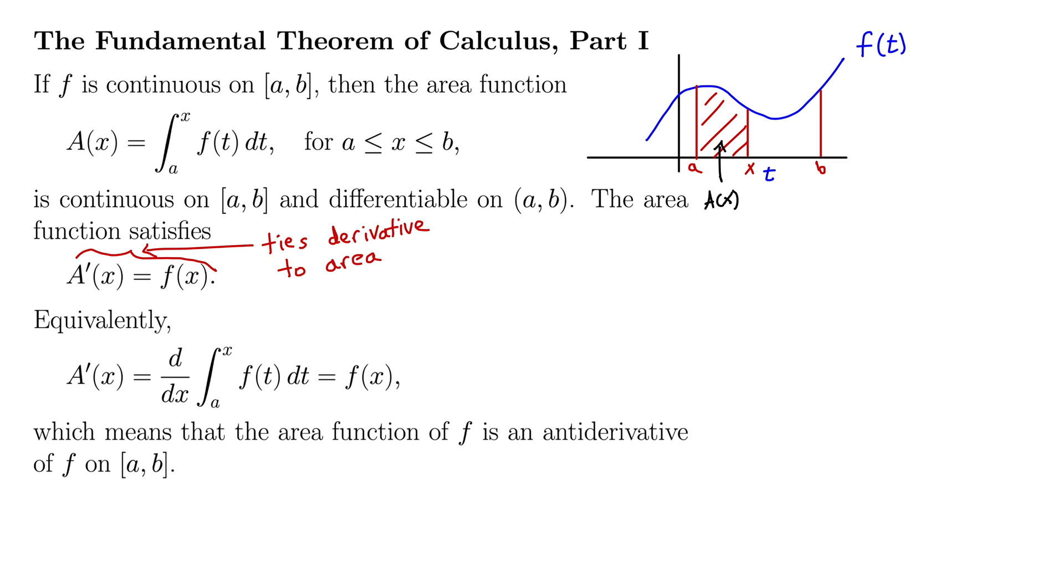Right? It tells us if we take the derivative of this area function, we get our original function that we're computing the area under back. So now we have the derivative, the area, and the original function all tied together in one theorem, which really opens everything up. Because now we can ditch that limit definition of the integral with the Riemann sums and all that, which was quite cumbersome, and instead use anti-derivatives. And that's the whole point.